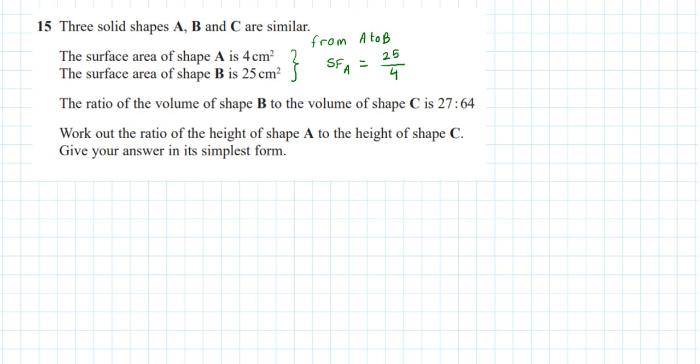So because area is two dimensions, the length is one dimension. So the scale factor for the length from A to B would be the root of 25 over 4 which is 5 over 2. So with A being the smaller shape and B being the bigger one, if I go from A to B, so if I'm going to have a length of A and I want to find that corresponding length of B, I would multiply it by 5 over 2 or 2.5.